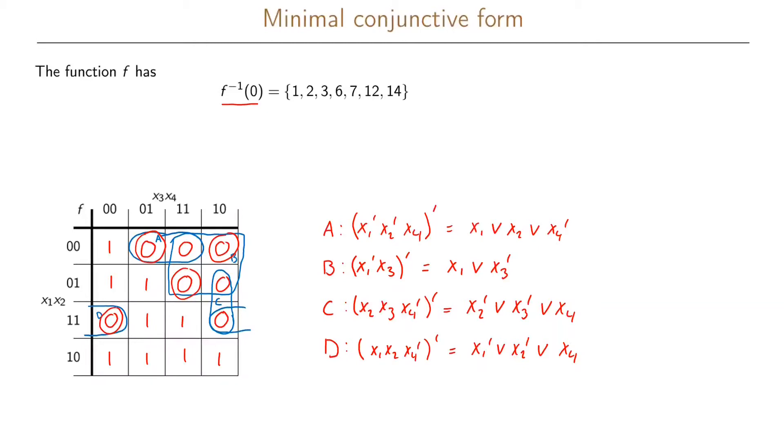Using these essential duals of the primes we will cover all the zeros in our Karnaugh map. So we can write this as f equals A and B and D. This equals x1 or x2 or x4 prime, and B which is x1 or x3 prime, and D which is x1 prime or x2 prime or x4. So this expression is our function written on minimal conjunctive form.